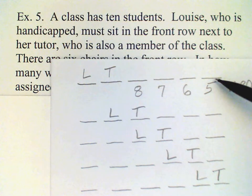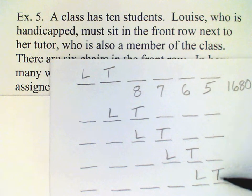And we have 1, 2, 3, 4, 5 different arrangements for Louise and her tutor. Each of those arrangements, there's 1,680 ways for the other students to be seated.